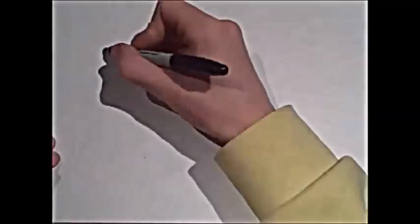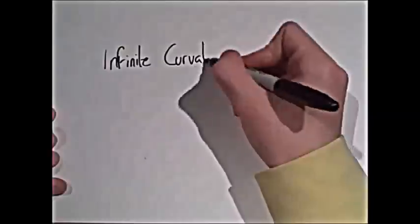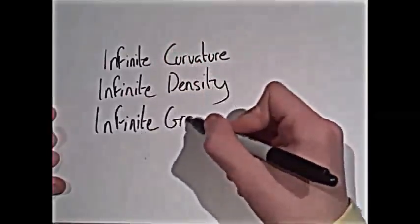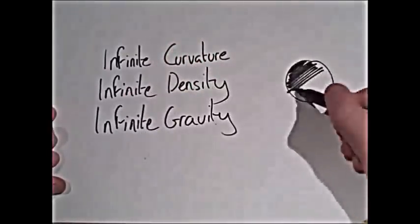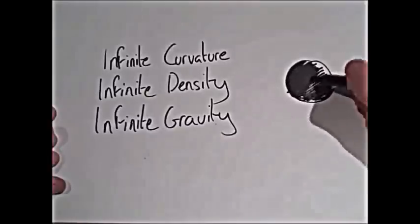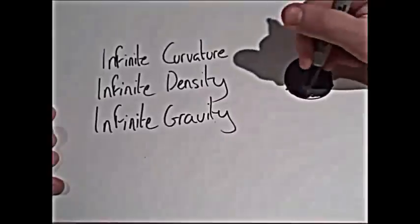No one can tell for certain what a black hole looks like. By definition, it can't be seen as no light escapes. But I can say what scientists predict it would look like through simulations, as it would be an object with infinite curvature, as all the matter is being crushed into infinite density by the infinite gravity.